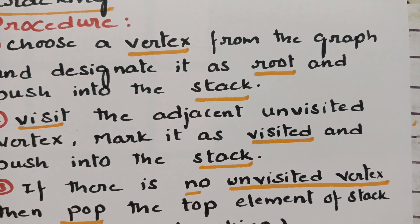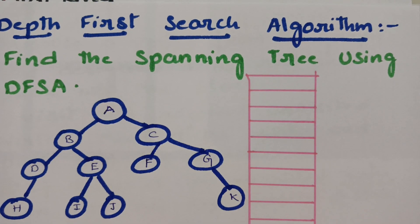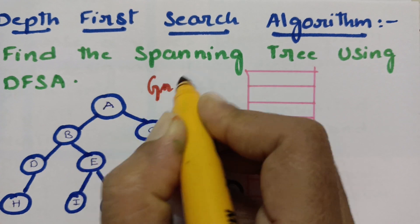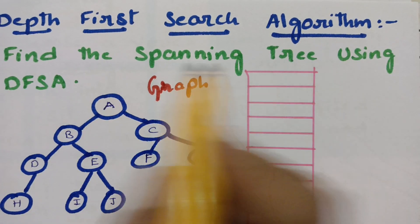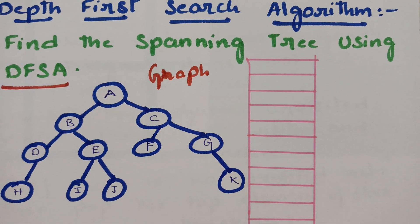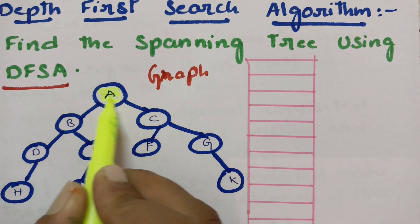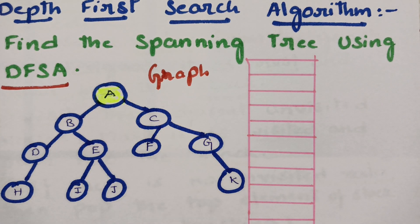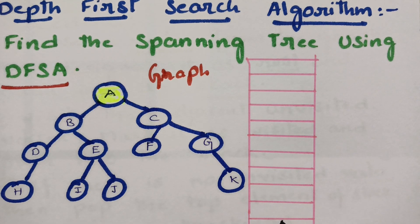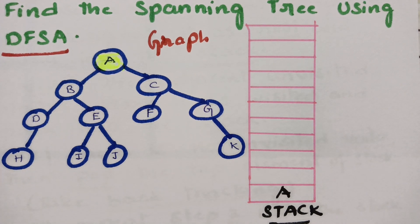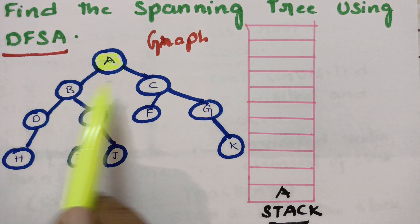It will be very clear if you follow this example. So this is the graph given. We have to find the spanning tree using the depth first search algorithm. The first thing is we have to select one of the vertices of the graph as the root vertex. I am selecting A as the root vertex. After selecting, we have to push it into the stack — so A is now in the stack.